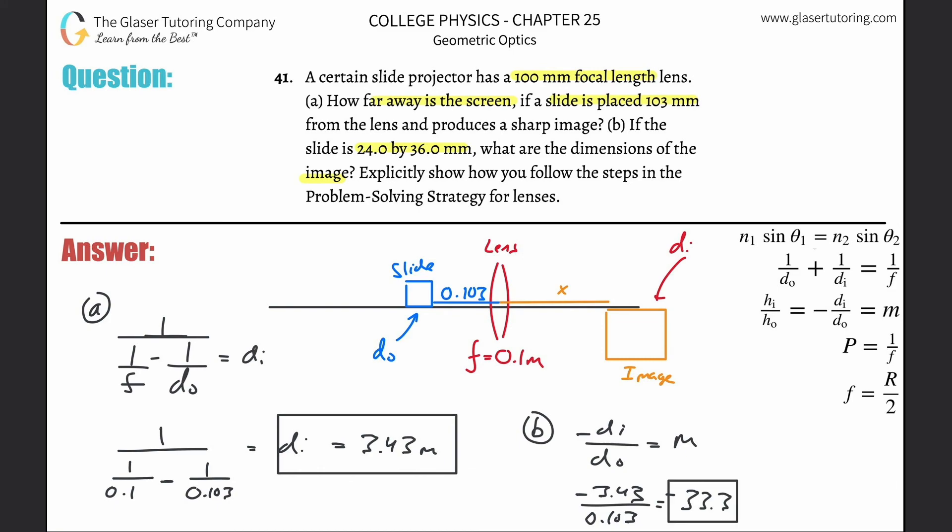This is the magnification. Let's assume this is the height—it doesn't really matter which is height and which is width. The height is 24 millimeters or 0.024 meters.